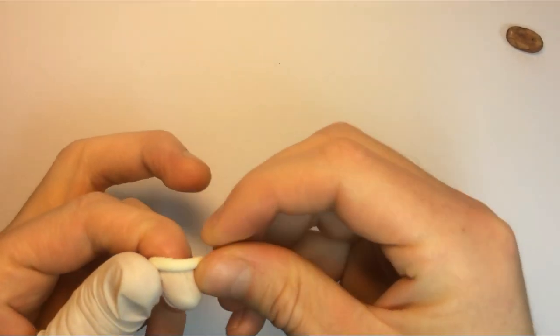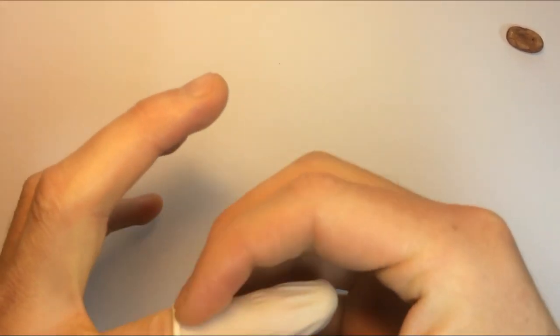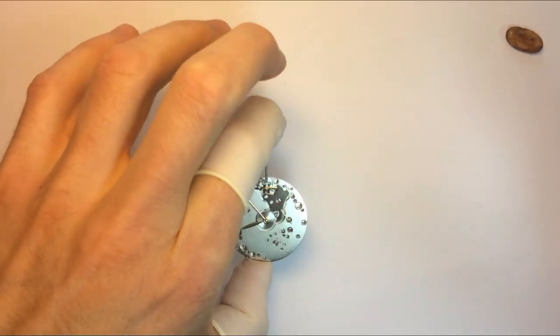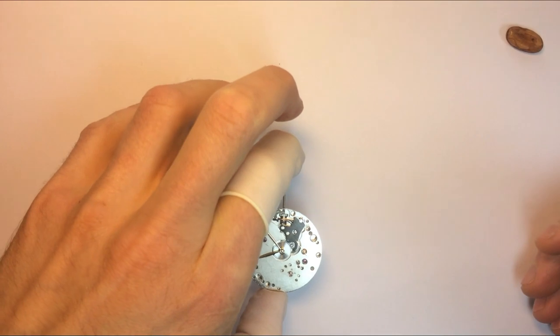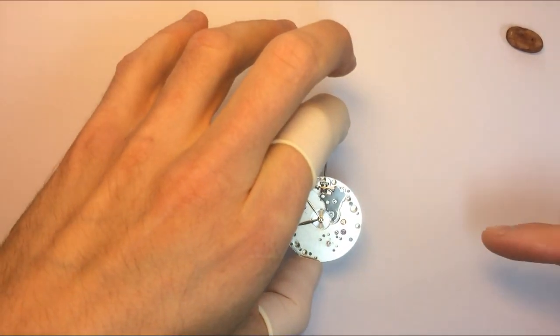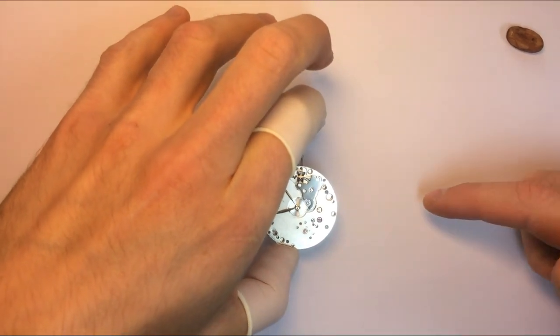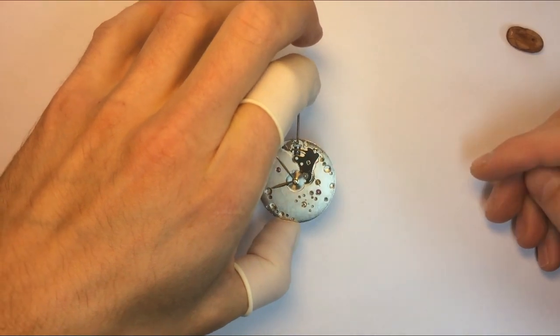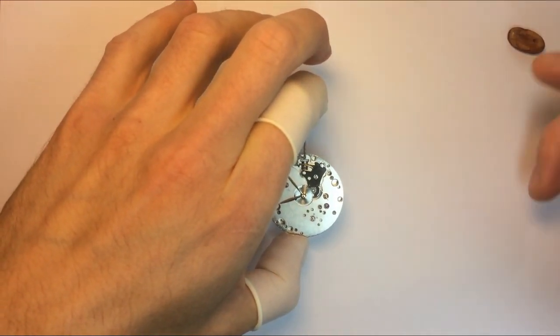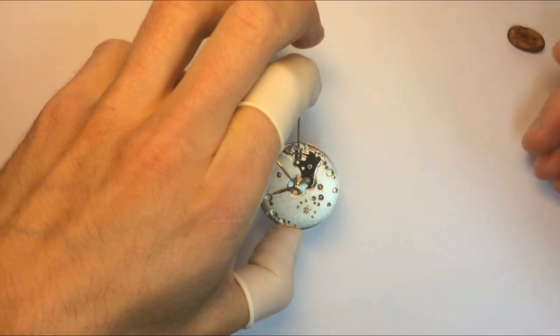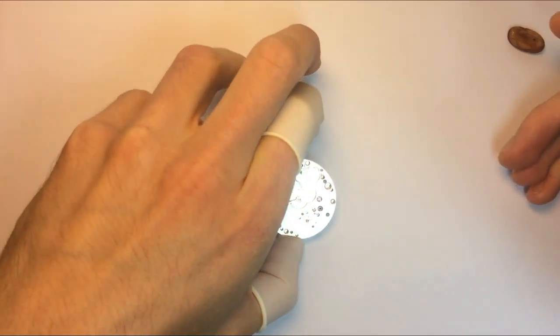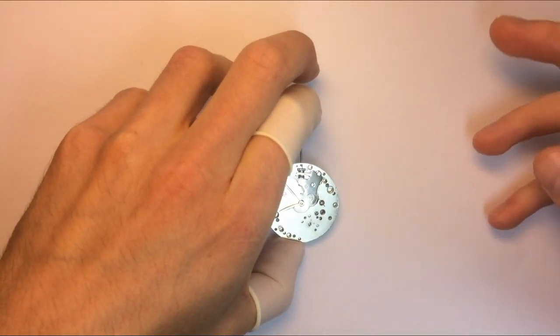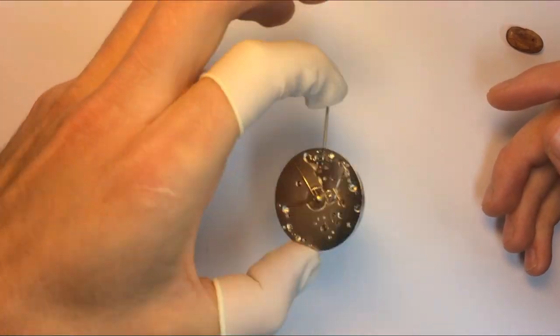I suggest that the first movement that you get is the ETA 6498. It's quite large and it's a pleasure to work with. It costs about $45 for the copy. If you start, you can buy one or two. Basically I would buy two because I already broke a few parts of this. When I went to eBay to get replacement parts, I realized that the parts along with the shipping cost the same amount as this movement.